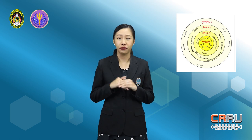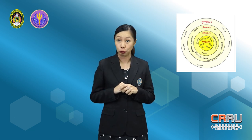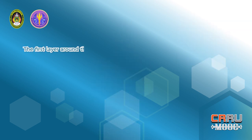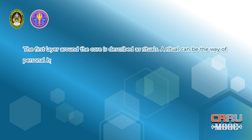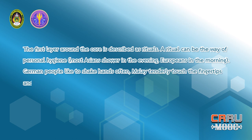The onion is made of three layers around the core. The core stands for the values of a certain culture, which does not change much — it mostly remains the same. Even if something seems outdated, it can still subconsciously play a role in the present, for both individuals and groups. The first layer around the core is rituals. A ritual can be the way of personal hygiene. Most Asians shower in the evening, Europeans in the morning. German people like to shake hands often; Malay tenderly touch the fingertips and then point to the heart. Those rituals change slowly.